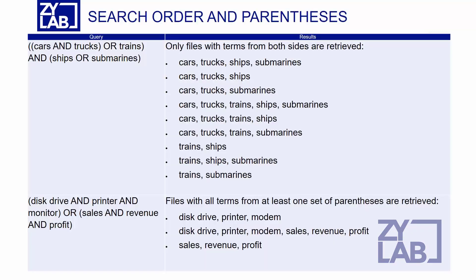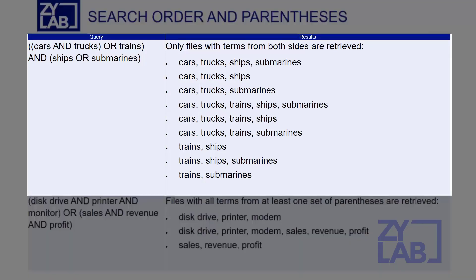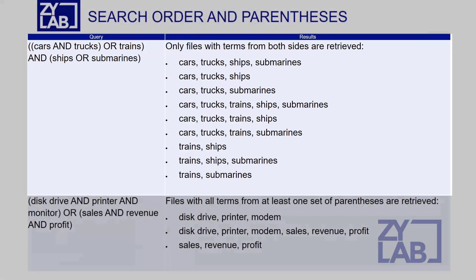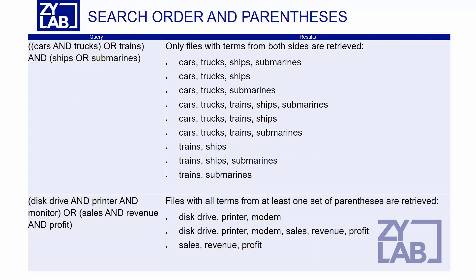The following are some additional examples of search order and the use of parentheses. In this example, the query is defined to find files with the terms CAR and TRUCK or TRAIN, as well as the terms SHIPS or SUBMARINES.